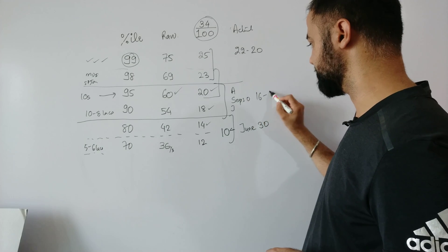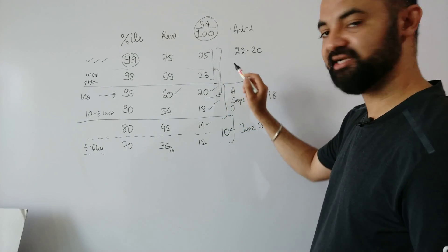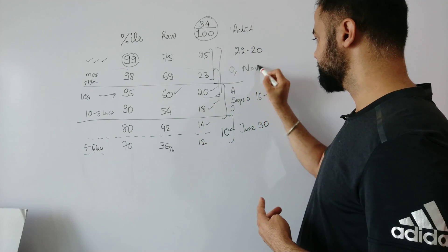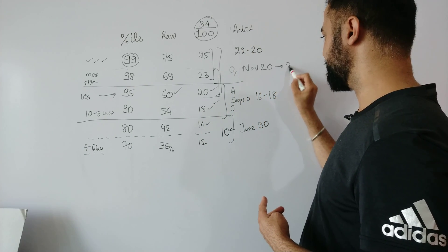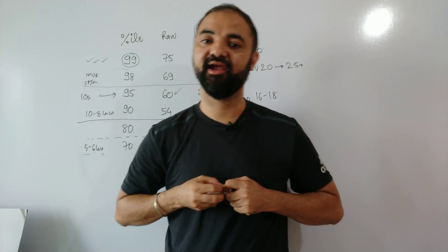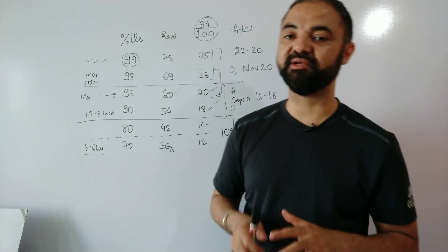By September 30, your target will become 16 to 18 questions correct, so that last two months, Indian students always send the last two months. So October, November, by November 20, my target will become 23 to 25 questions correct, which will fetch me 99 percentile and all IIM calls. That should be your target.